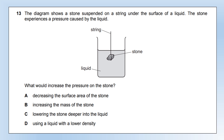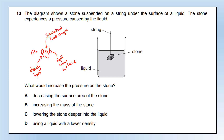A stone is suspended on a string under the surface of a liquid. What would increase the pressure on the stone? The equation for pressure in a liquid is: pressure = density × gravitational field strength × depth (p = ρgh). Options A and B are not in the equation, so they can be eliminated. Lowering the stone deeper increases h — that increases pressure. Using a lower density liquid decreases ρ and would lower the pressure, so that's the wrong change. Answer: lowering the stone deeper.